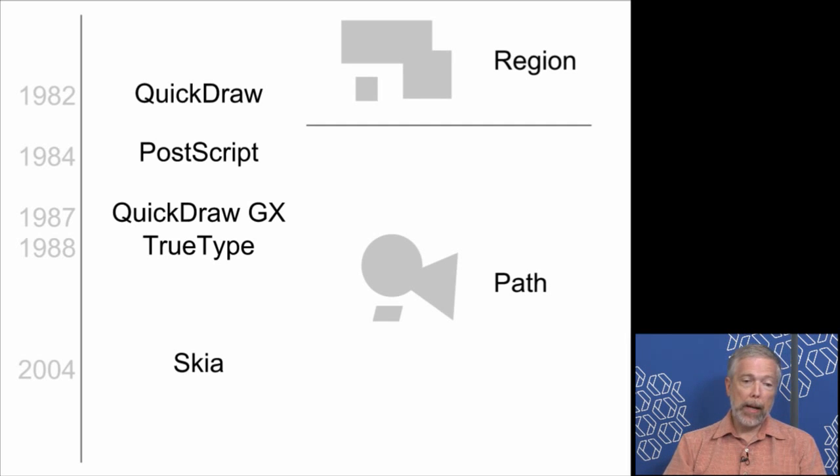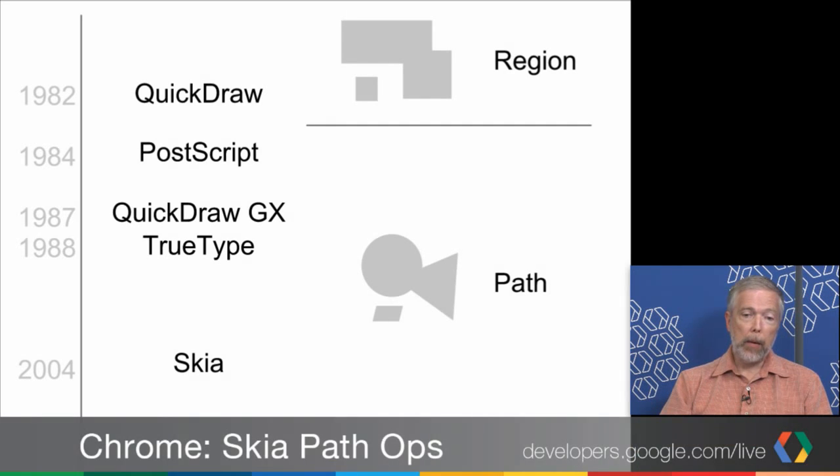When Quickdraw was introduced back in the 80s, it had a way of describing an area of the screen that was called a region. And it was just a collection of rectangles. But it was the basis for the Macintosh windows and the windowing system. A little while later, with Postscript and Quickdraw GX, and so forth, paths were introduced. And paths, like regions, describe an area of the screen.